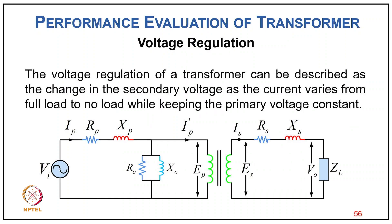For voltage regulation as a performance evaluation: voltage regulation of a transformer is the change in secondary voltage as current varies from full load to no load, with primary voltage held constant. The equivalent circuit has primary voltage Vi, primary resistance Rp, primary leakage reactance Xp, a shunt branch, an ideal transformer with Ep and Es, primary current Ip, secondary current Is, secondary resistance Rs and leakage reactance Xs, and the load impedance across the output voltage.